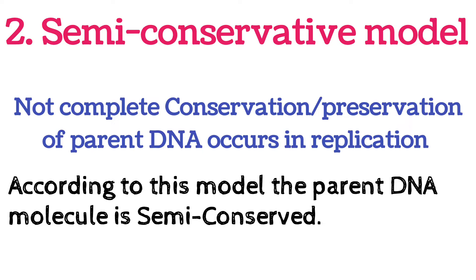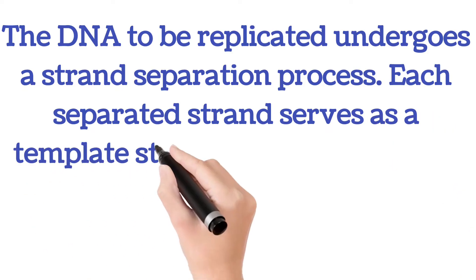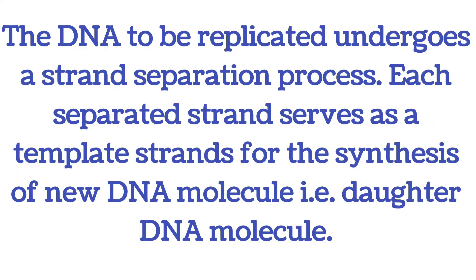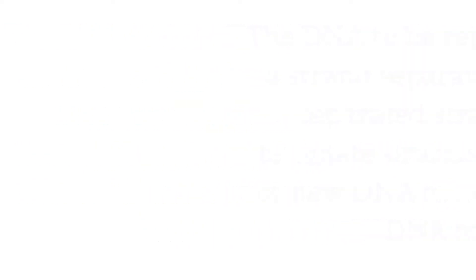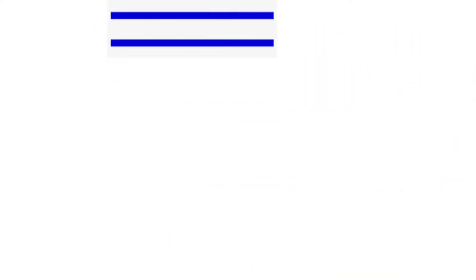Looking at the figure, the DNA molecule shown in blue is the parent DNA molecule to be replicated. After replication, two DNA molecules are formed — one in blue (old) and one in orange (new). The old DNA molecule served entirely as a template, directing the synthesis of the new DNA molecule, so complete conservation of the parent DNA occurs — that is why it is called the conservative model.